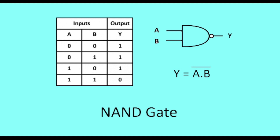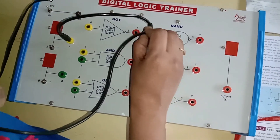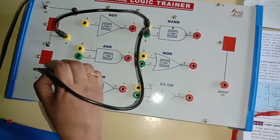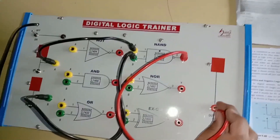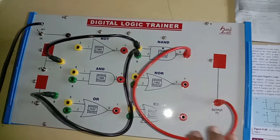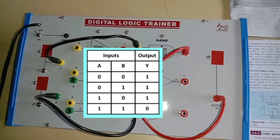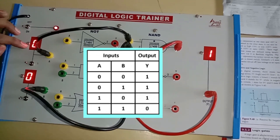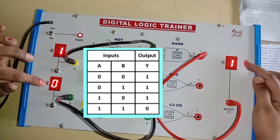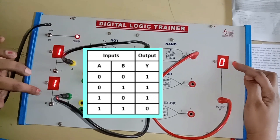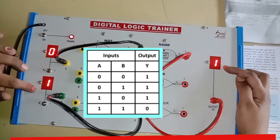Next is the NAND gate. Similarly, terminals 1 and 2 of the NAND gate are connected to inputs A and B. The output is taken from terminal 3. Now turn on the kit. With inputs 0,0 the output is 1. With input 1,0 the output is 1. With input 0,1 the output is 1. With input 1,1 the output is 0. Thus the truth table is verified.